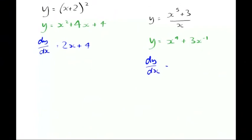Dy by dx equals 4x cubed minus 3x to the minus 2. Bringing the power down to the front, knocking 1 off the power. Again, because it gave it to us in that form, I'm going to rewrite it like that. That's the same as 4x cubed minus 3 over x squared.